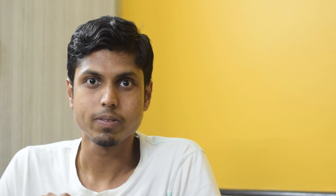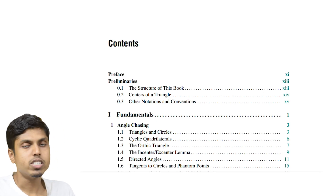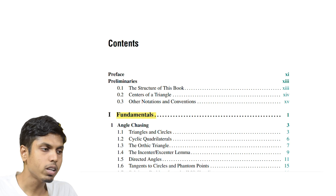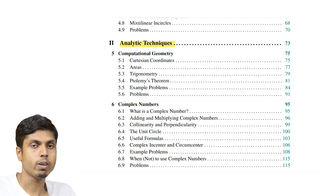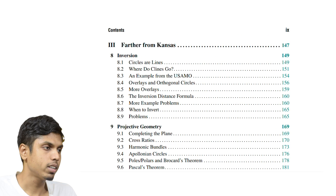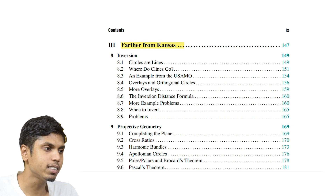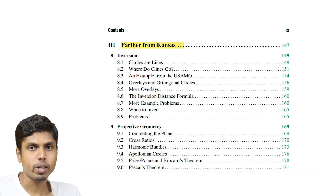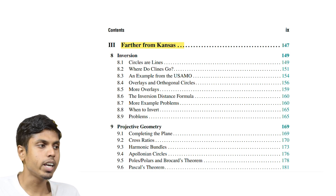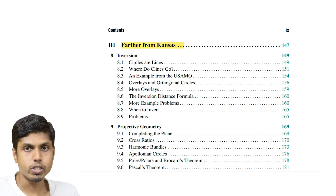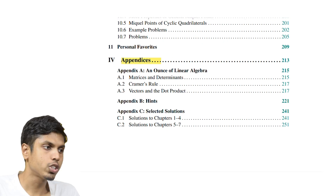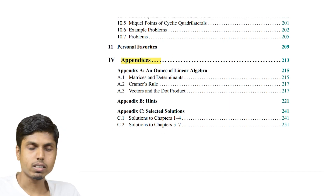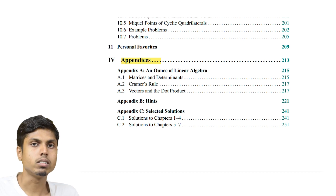We will get a closer look at the contents of this book. It has four major sections: fundamentals of Euclidean geometry, analytical techniques involving methods to tackle problems, a section named 'Farther from Consensus' covering advanced techniques and plane transformations, and a small fourth section called appendices with hints and solutions to selected problems.